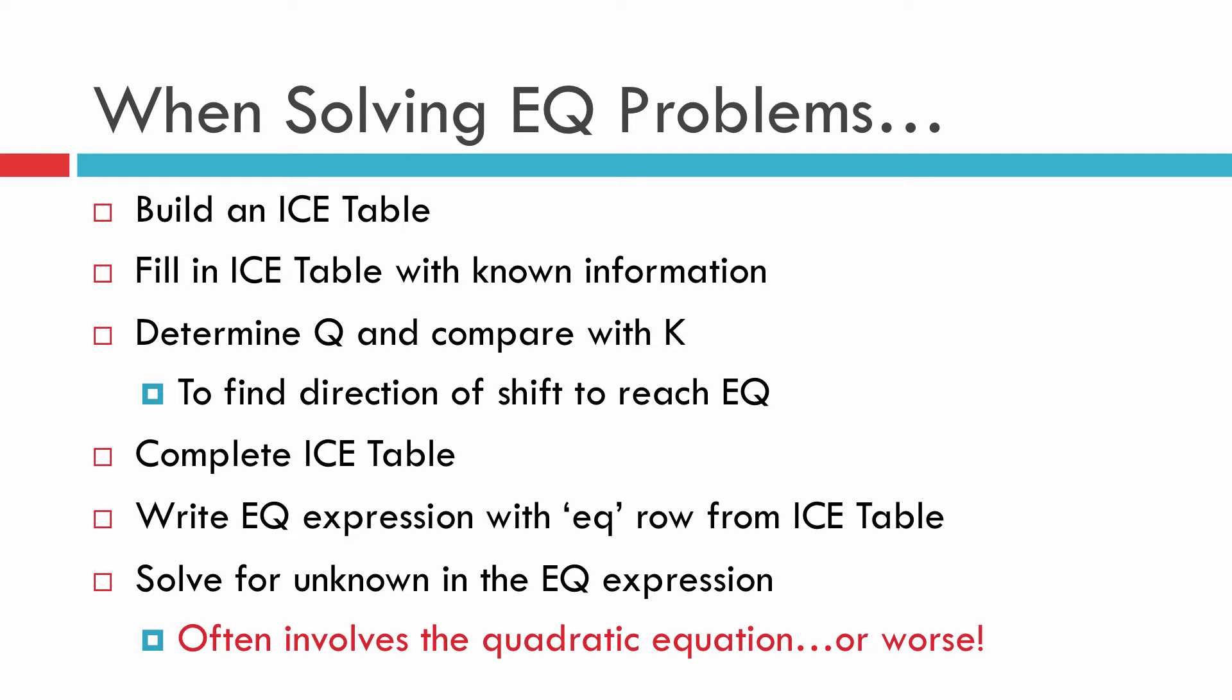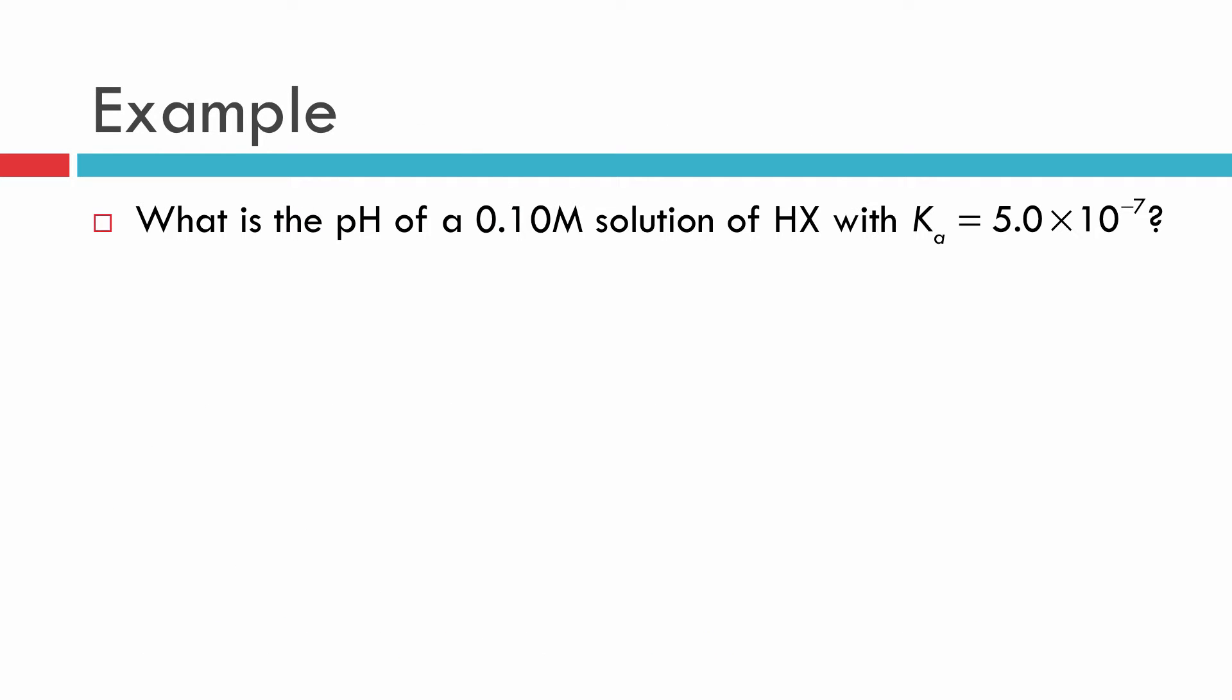By the way, the worst part about solving one of these things is that when we get to the end, you might have the quadratic equation, or even worse, something that requires a computer to solve. Our goal today is to simplify so that we don't have to necessarily do the quadratic equation, but still get an accurate answer. Here's the example problem: What's the pH of a 0.10M solution of HX with Ka equals 5.0 times 10 to the minus 7? I'm going to go through the full solution here very quickly. This is a good example of how we go about solving one of these problems.